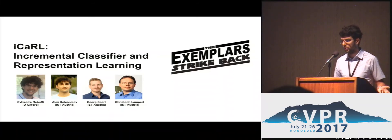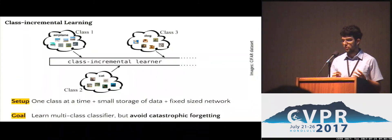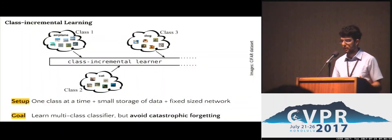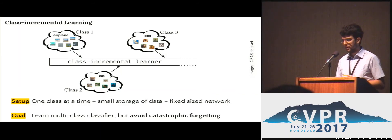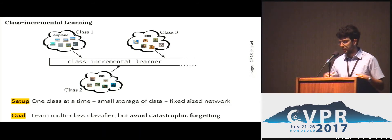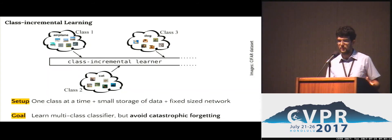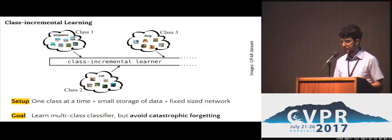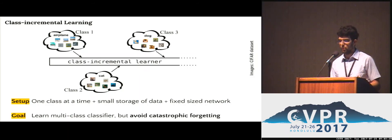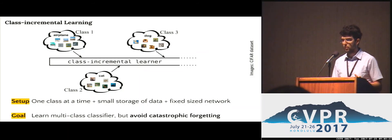So what is class incremental learning? You want a standard multi-class classifier that puts images into categories, but this time you don't want it to have all the training data at the same time. Classes appear and disappear sequentially. Just imagine a robot going through a room, seeing toys, and then going outside and seeing a big tiger — you don't want it to forget the first objects it's seen. Besides this catastrophic forgetting effect, it has to have a small memory to store images and a fixed-sized network.